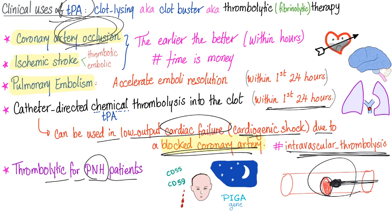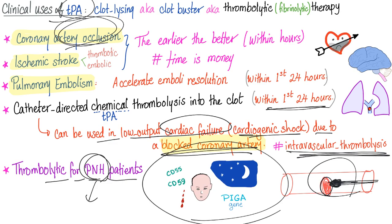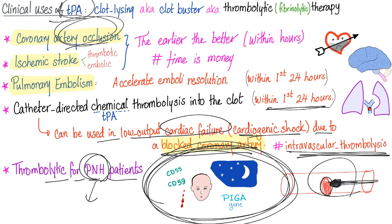Thrombolytic therapy can also be used for PNH patients — paroxysmal nocturnal hemoglobinuria — because PNH patients are more prone to clots, and thrombolytic therapy helps address that.